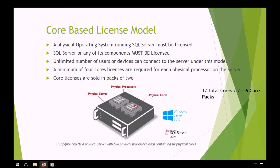Licenses are actually sold in two-packs. In our model depicted here, we have a physical server with two physical processors and six physical cores per processor, giving us a total of 12 cores. Dividing by two, meaning in two-packs, we would have to purchase a six core-pack license for SQL Server on top of our license for the operating system.